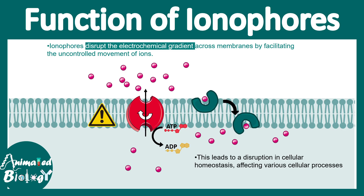This leads to disruption of many cellular processes. In the context of the electron transport chain, ATP production is hampered. Cell signaling can also be disrupted, since signaling sometimes requires an increase in calcium or other second messengers in a particular region — and ionophores can disrupt that aspect.